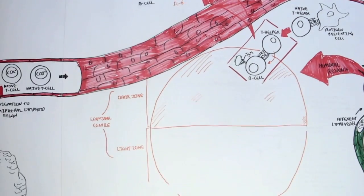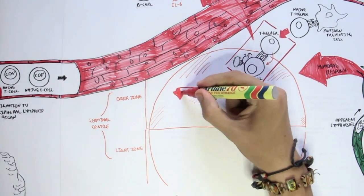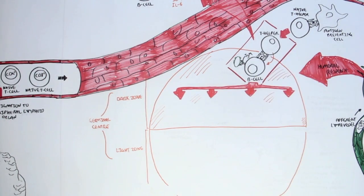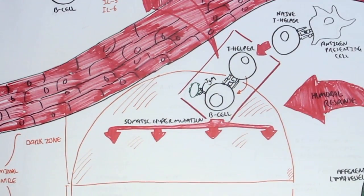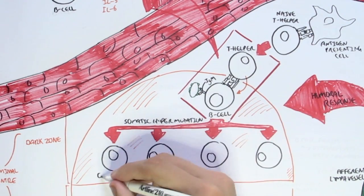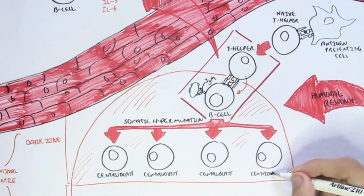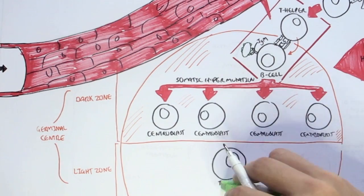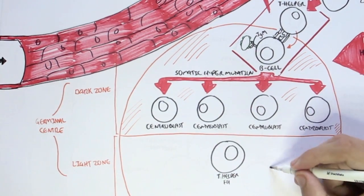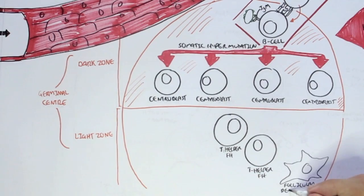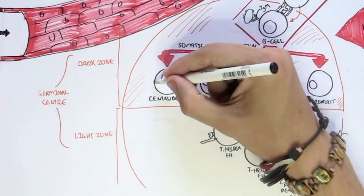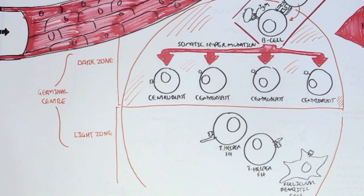When this immature B cell is activated by the T helper cell, it will begin to undergo somatic hypermutation and also proliferate. All these proliferated immature B cells are called centroblasts in the dark zone, and they all have unique antibodies due to somatic hypermutation. In the light zone, there are special T helper follicular cells as well as follicular dendritic cells, which proceed with the activation and maturation of the B cells — the centroblasts.